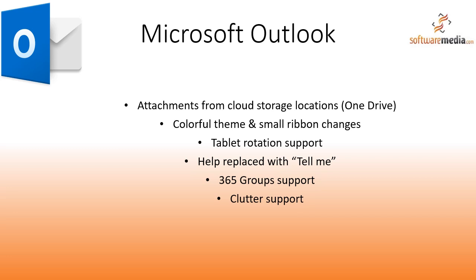There is also Clutter support. Another Office 365 feature that can now be managed directly from within Outlook is the Clutter feature. Clutter is a machine learning feature that automatically puts messages you are most likely to ignore into a Clutter folder, based on what you've done with similar messages in the past. Outlook 2016 contains new Move to Clutter and Move to Inbox commands in the Move menu on the ribbon and in the right-click menu to help train the Clutter feature.